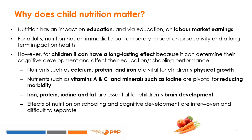Specifically, nutrients such as calcium, protein, and iron are vital for children's physical growth. Nutrients such as vitamins A and C and minerals such as iodine are pivotal for reducing morbidity. Furthermore, iron, protein, iodine, and fat are essential for children's brain development. There is both a direct and indirect effect of nutrition on schooling and cognitive development via an increasing yield on schooling performance. These effects are often tightly interwoven and difficult to separate in empirical work.